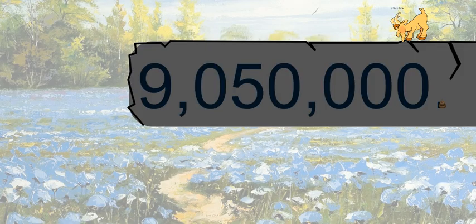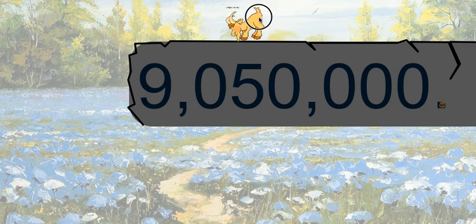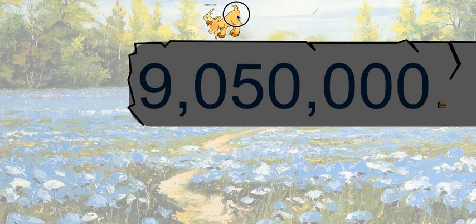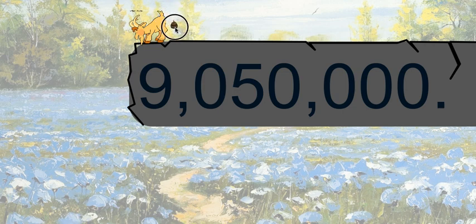Once upon a time there was a mountain goat named Billy, and Billy just loved to play on the mountains just like any other friendly mountain goat. Since he was a mountain goat, he loved to look over the edge — it excited him. But then he got a little too excited and he dropped a doo-doo right there.